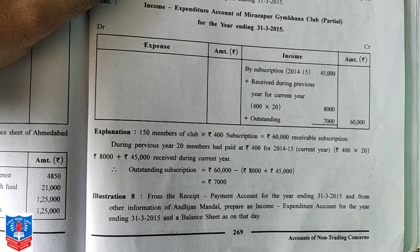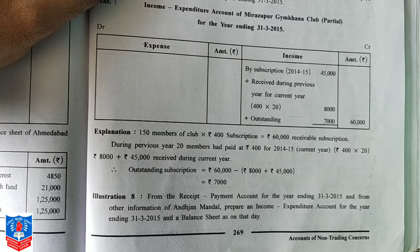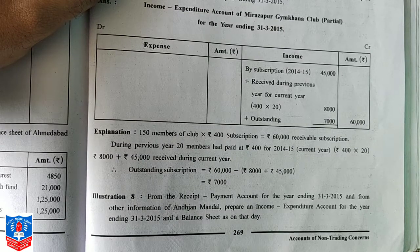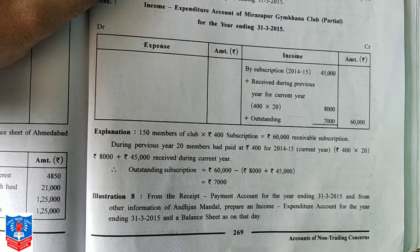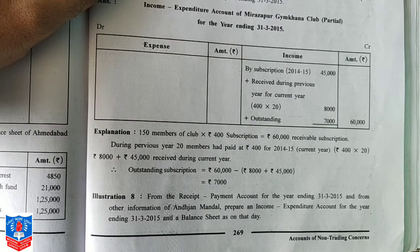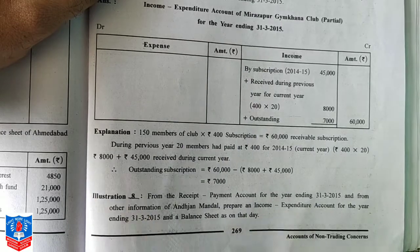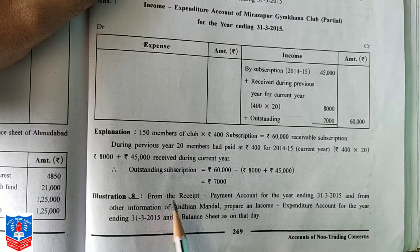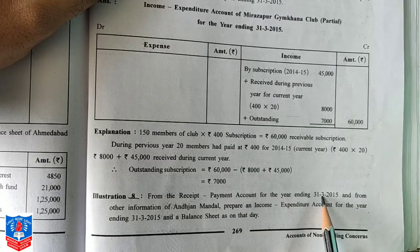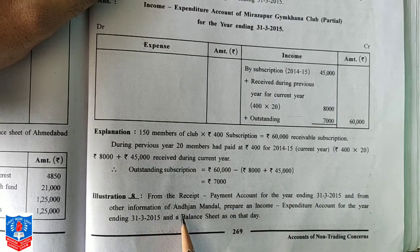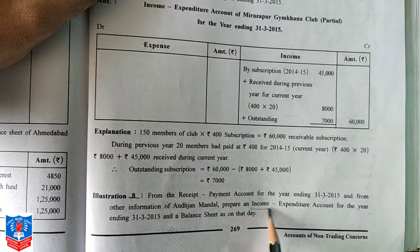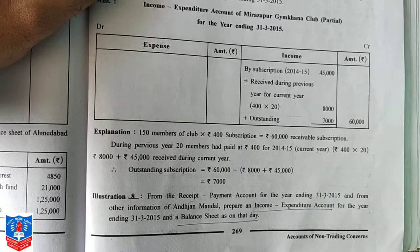In our last video we have gone through question number 12, and that question number 12 was last as per your reduced portion. Now in today's class I am going to deal with illustration number 8, because in questions such type of question is not included. So illustration number 8 is important — from the receipt payment account for the year ending on 31-3-2015, and from the other information of Andhijan Mandal, prepare income expenditure account and balance sheet as on that date.